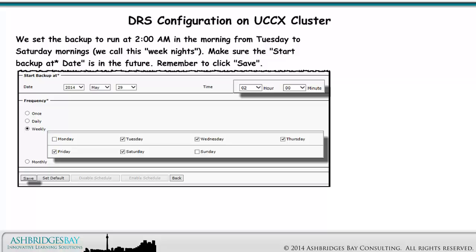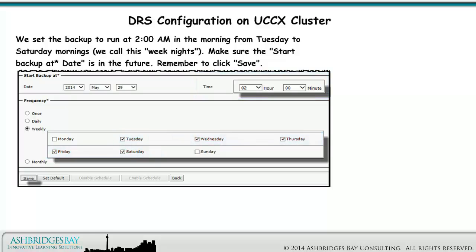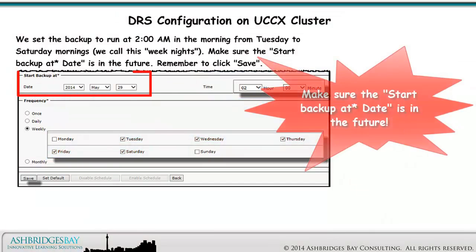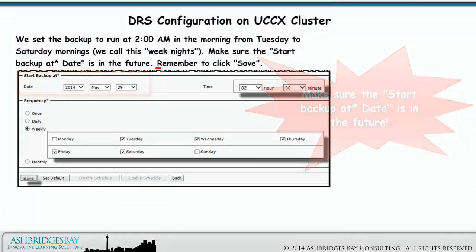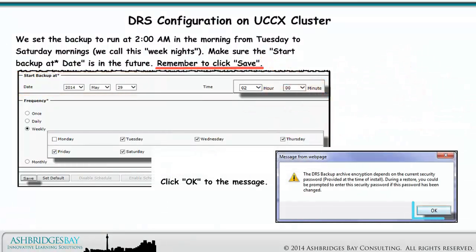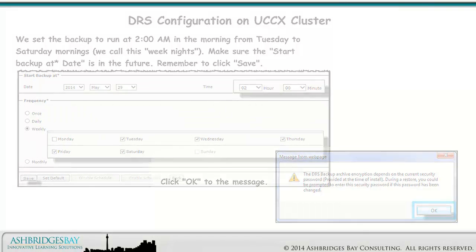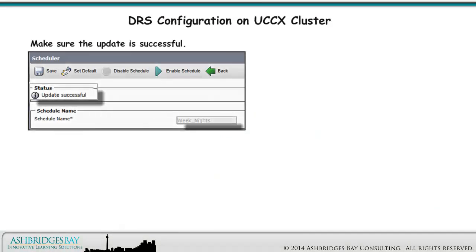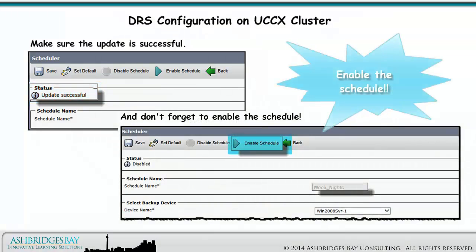We set the backup to run at 2 a.m. from Tuesday to Saturday mornings — we call this "weeknights." Make sure the Start Backup at date is in the future. Remember to click Save and click OK to the message. Make sure the update is successful, and don't forget to enable the schedule.